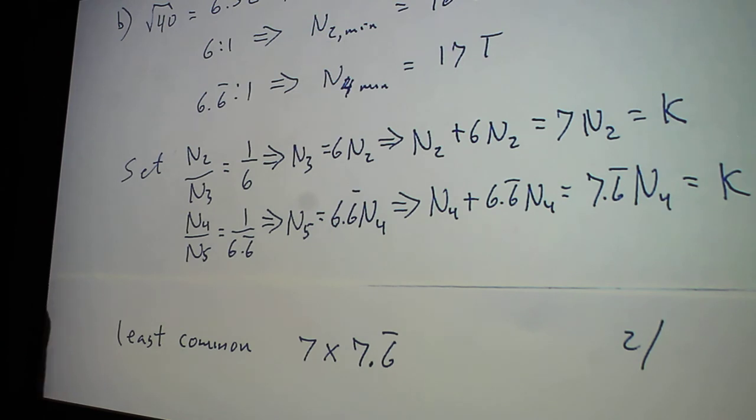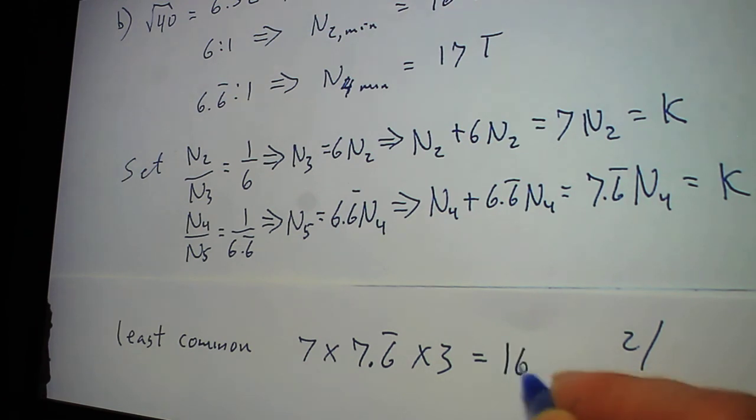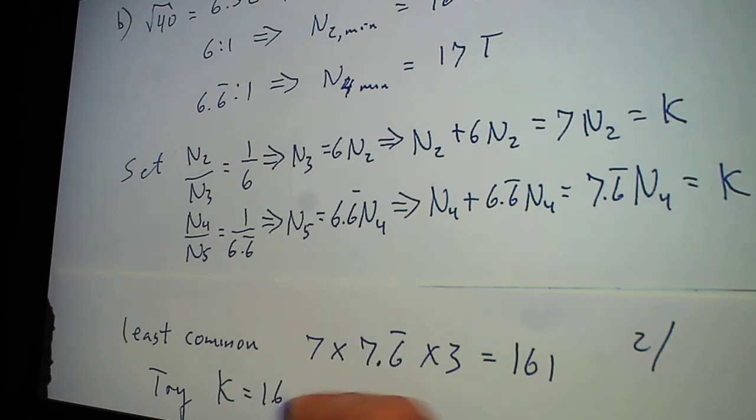And again, to get rid of that 2 thirds there, what I'm going to do is I'm going to multiply it times 3. And when I do that, I get 161. So I'm going to try K equal to 161.